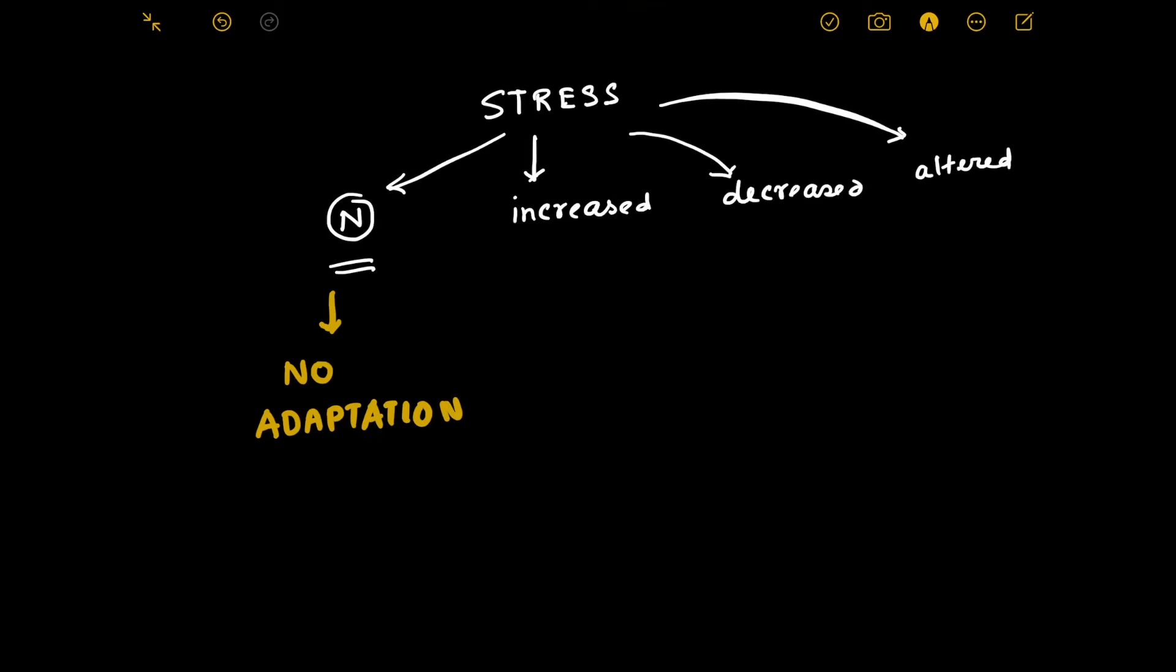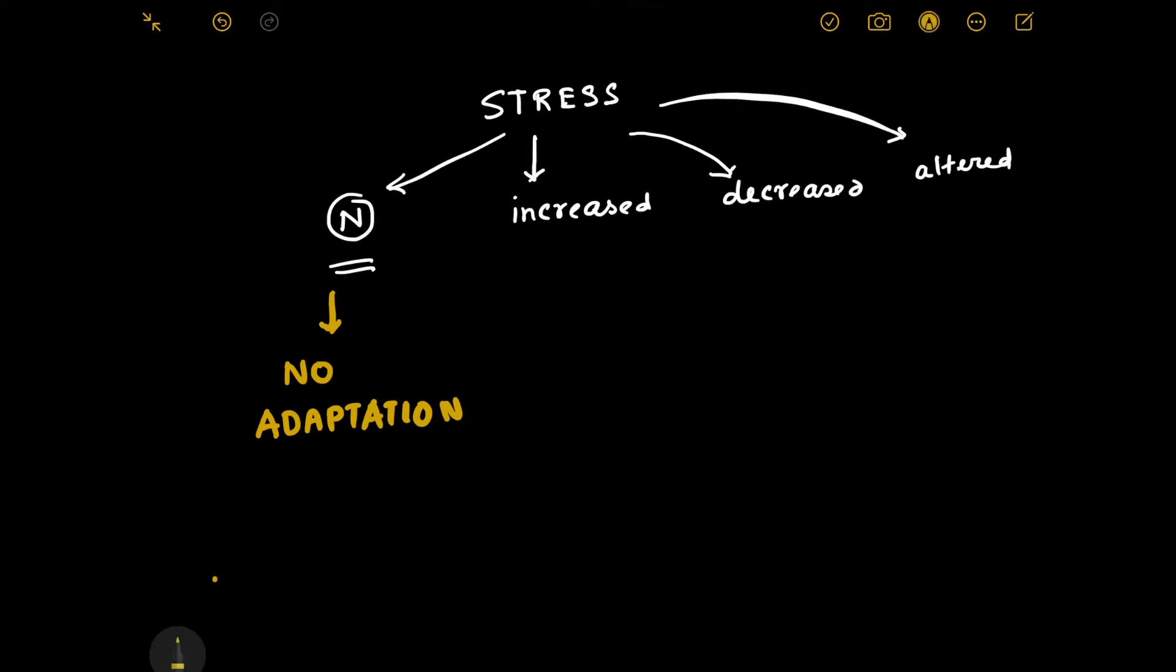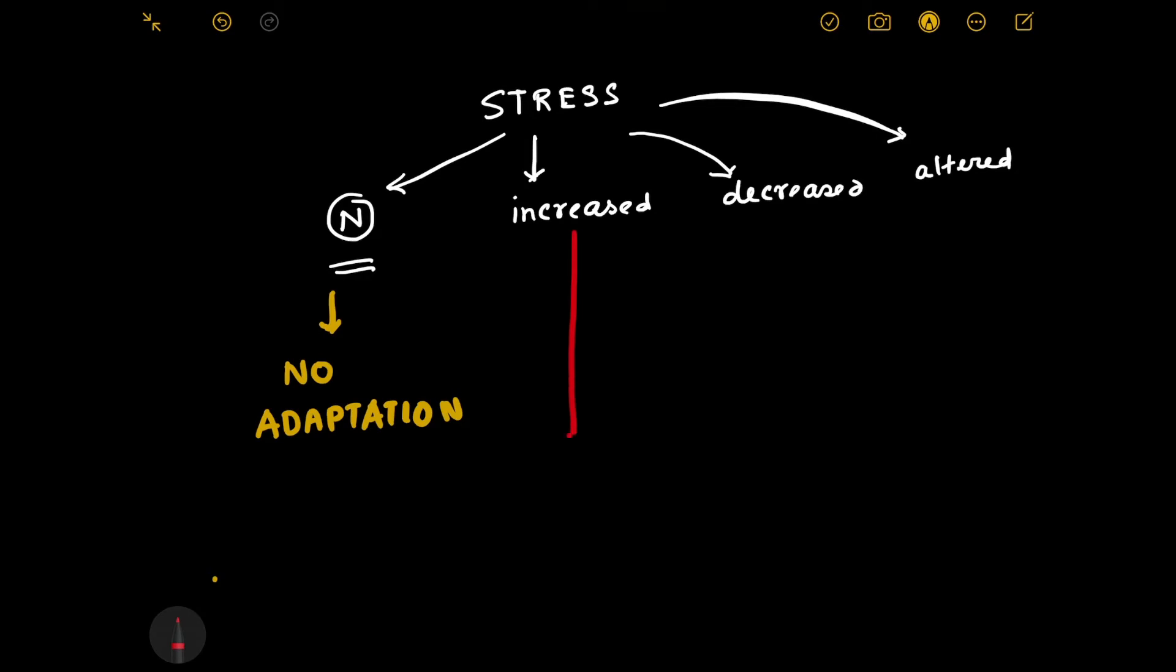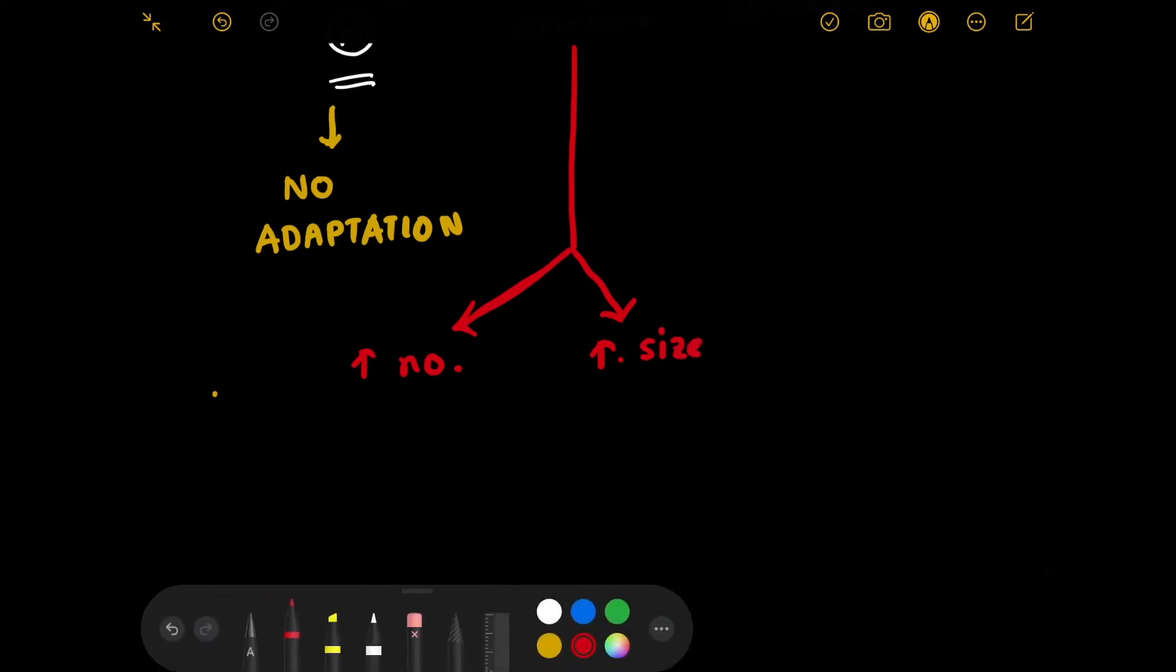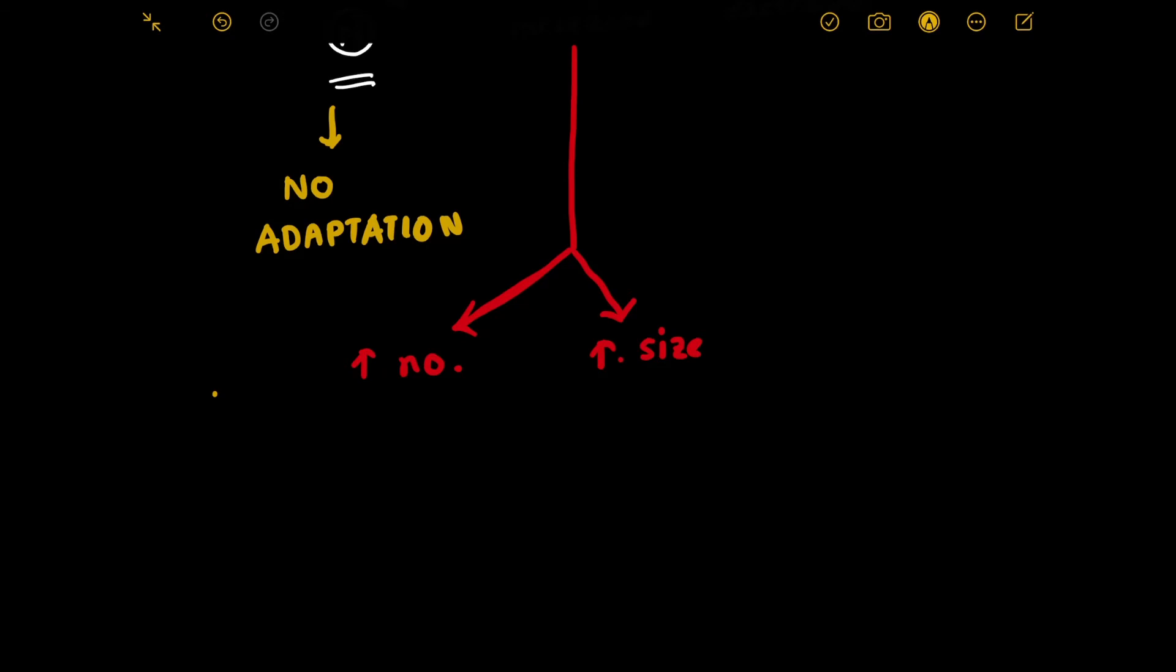Now if you increase the stress, then what's going to happen? In that situation, the cell can deal with it in two ways. The cell can increase in number, or the cells can increase in size to deal with the increased stress. If they increase in number, then that is called hyperplasia, as we discussed in the previous class. And if the cells increase in size, then that will be called hypertrophy.